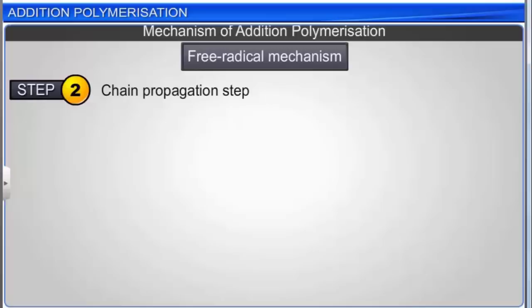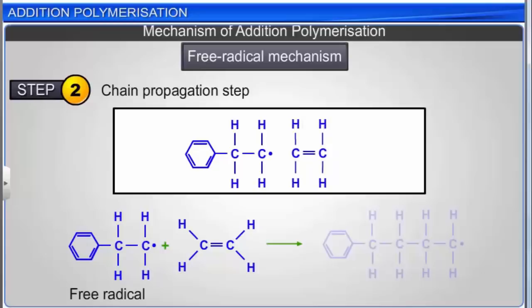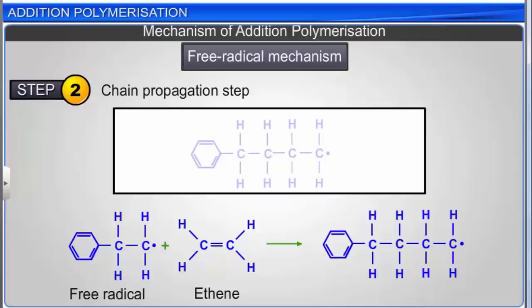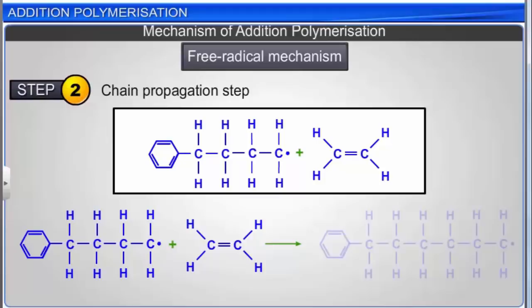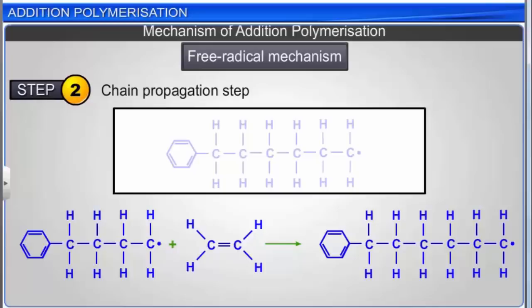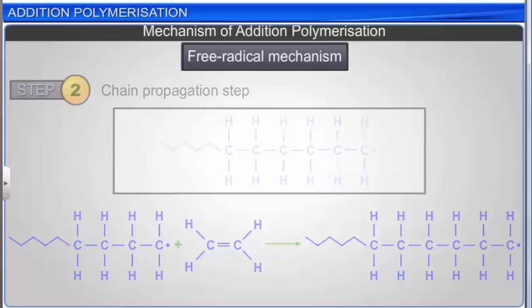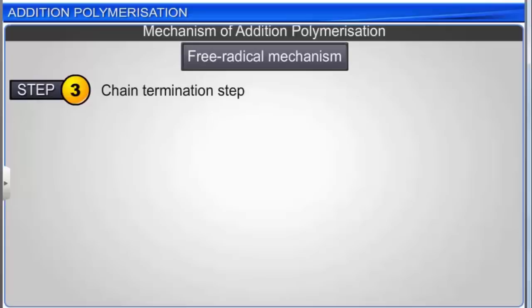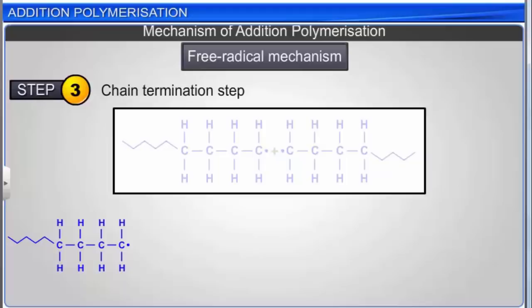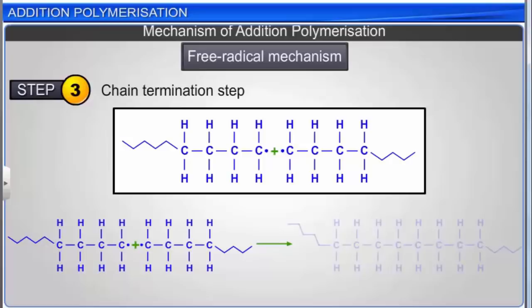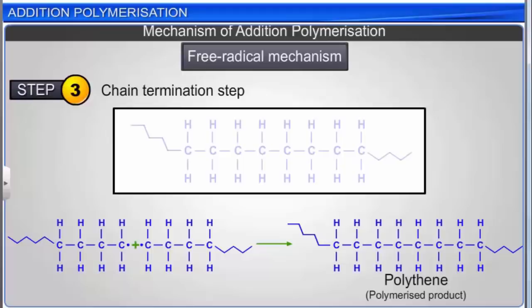The next step is the chain propagation step. The radical generated at the end of the chain initiation step reacts with another monomer, ethene, to form a new and bigger radical. This radical attacks another molecule of ethene to form a still bigger radical. The series of reactions continues, and as a result the alkyl chain grows longer and longer. The polymerized product forms in the last step: the chain termination step.